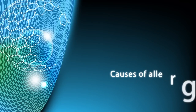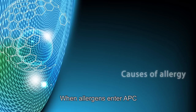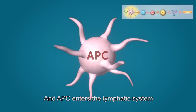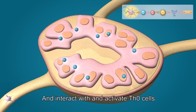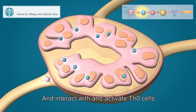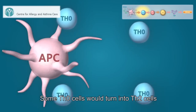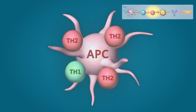Cause of allergy. In patients who have an allergic tendency, when allergens enter the APC, and the APC enters the lymphatic system and interacts to activate Th0 cells, some Th0 cells would turn into Th2 cells.